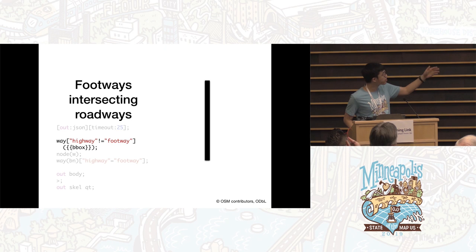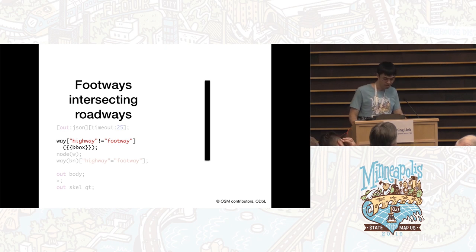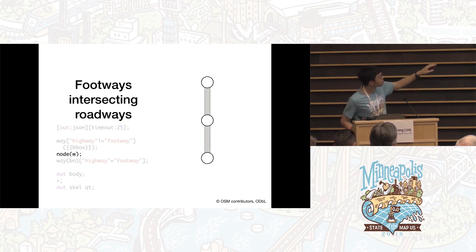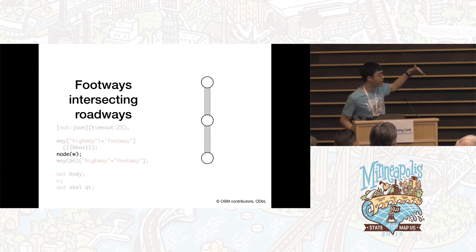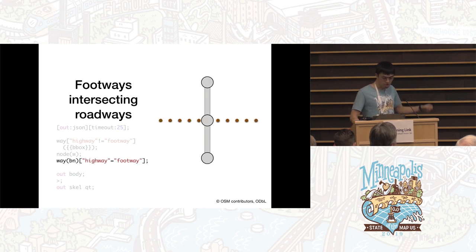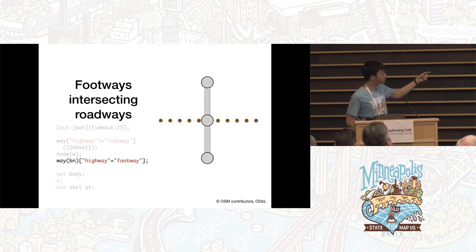First it finds the roadways — highways that aren't footways. Then it recurses down into the nodes forming those ways: 'node(w)', and there are actually a set of these codes you can use to recurse in different ways. Then it recurses back up to the footways that incorporate those nodes.